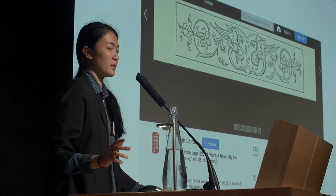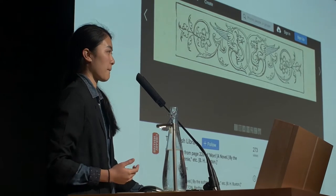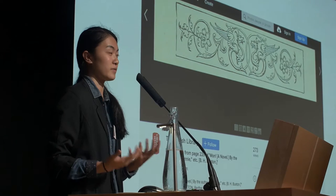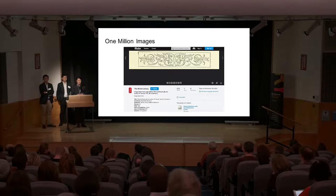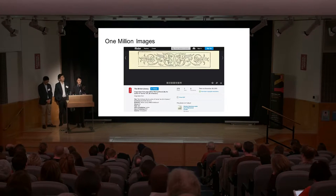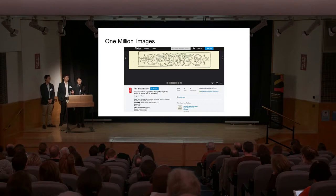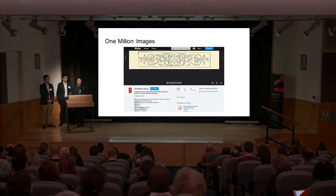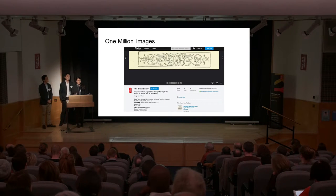The dataset we use for this project, as Melissa talked about before, is the British Library Flickr Commons Collection. It has over one million images on topics ranging from travel to anthropology to science. The British Library initially uploaded it for the general public and for researchers to use in new and interesting ways.